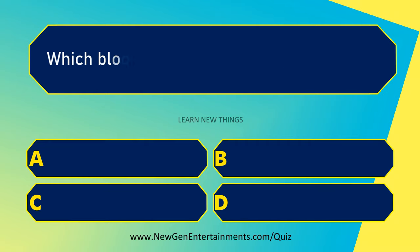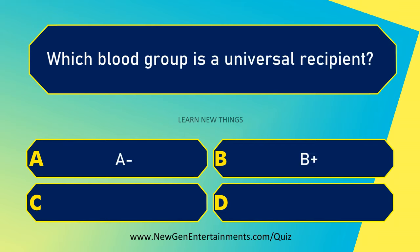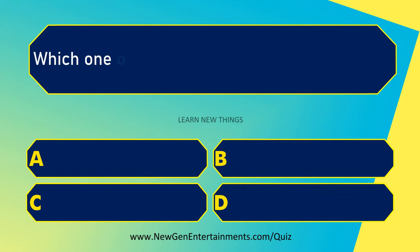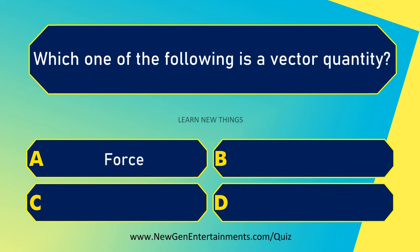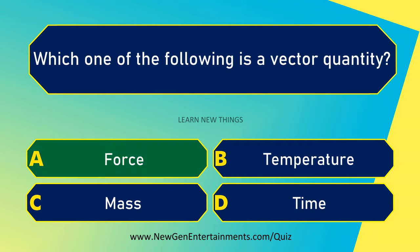Which blood group is a universal recipient? AB positive. Which one of the following is a vector quantity? Manganese.